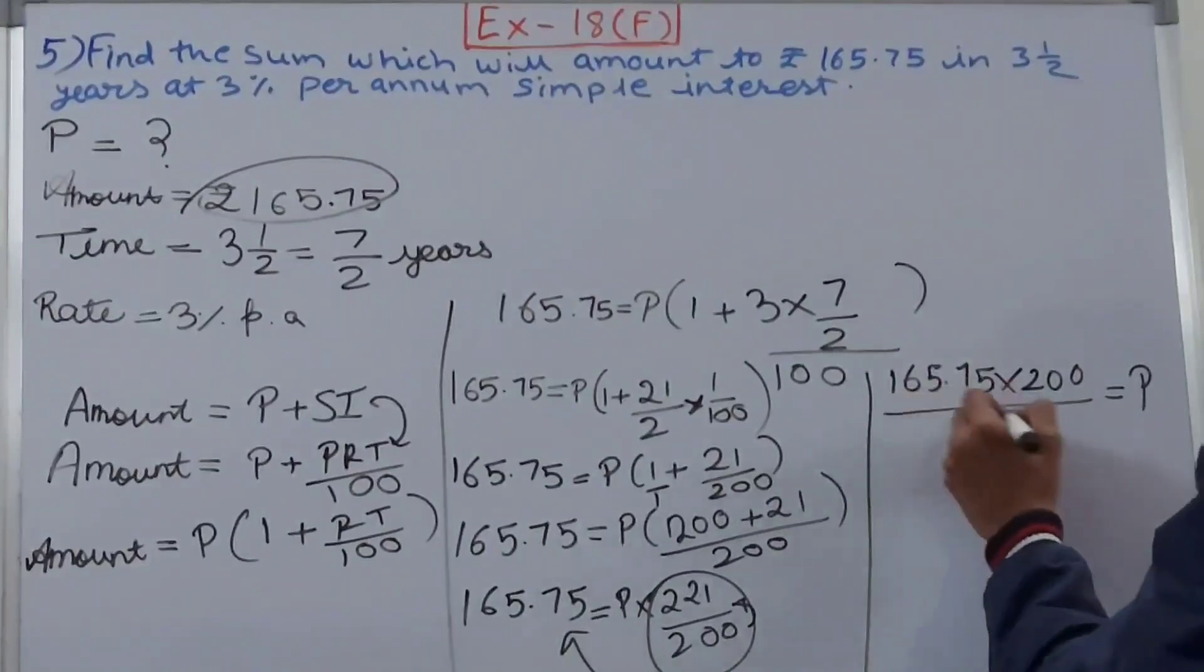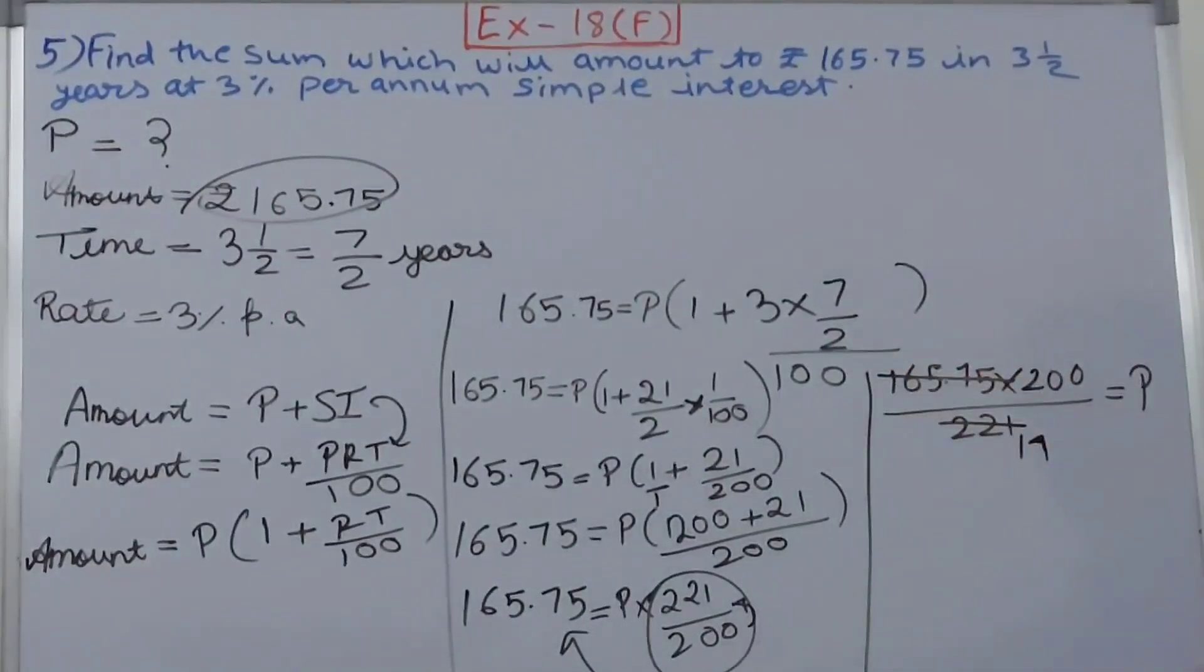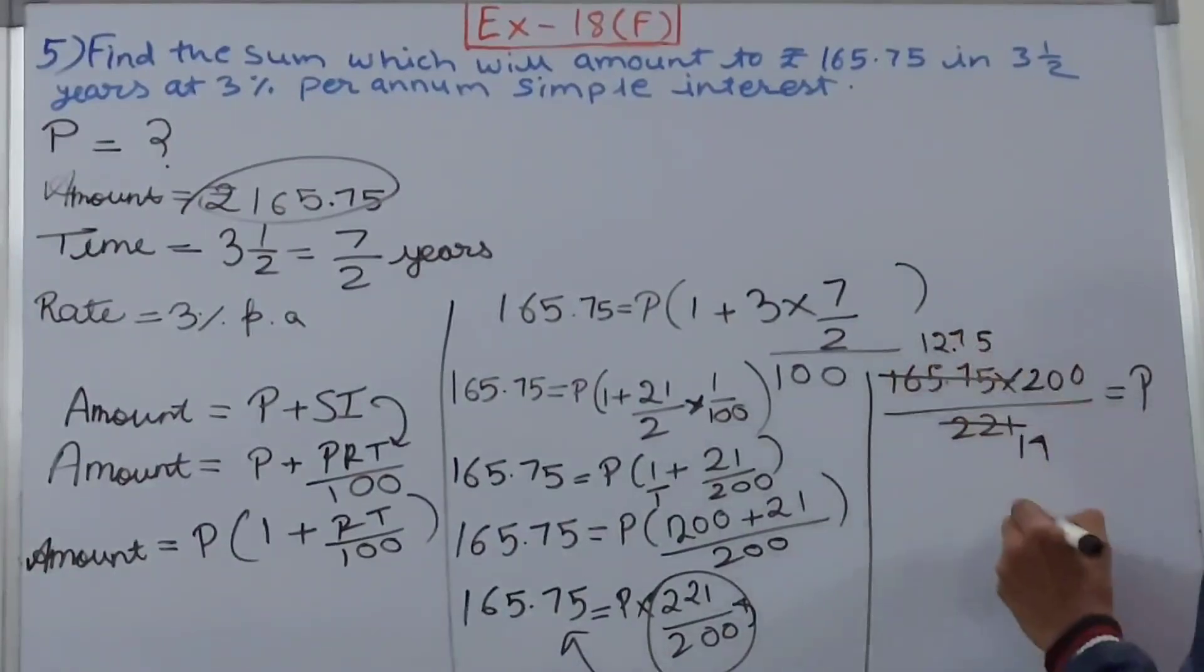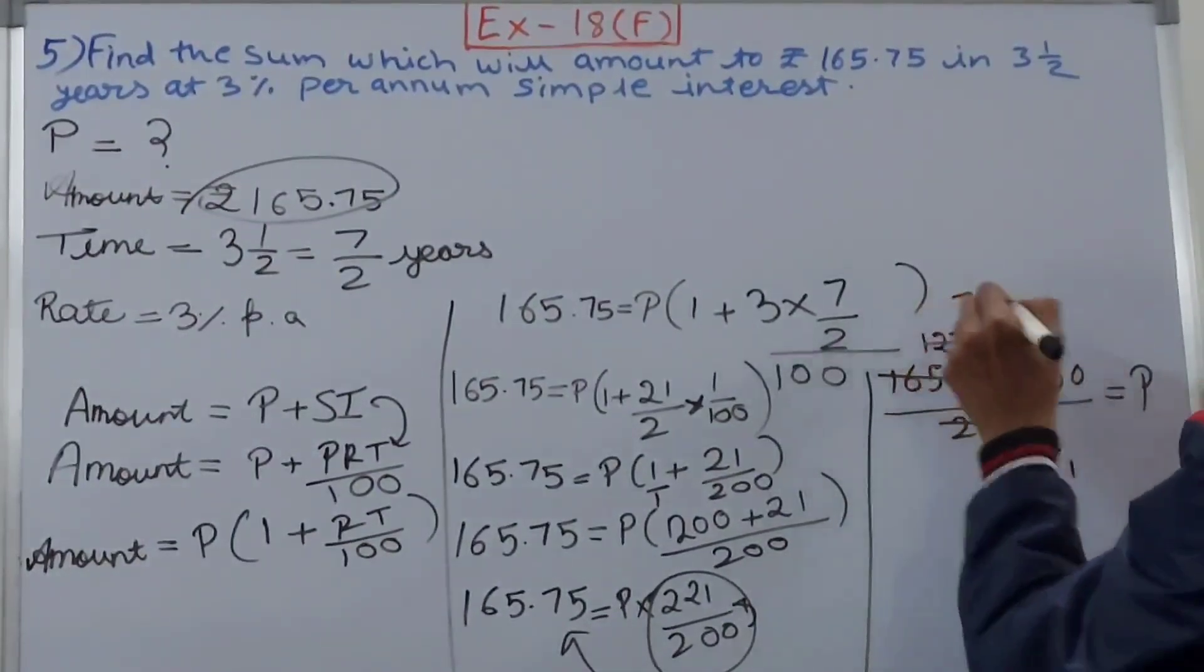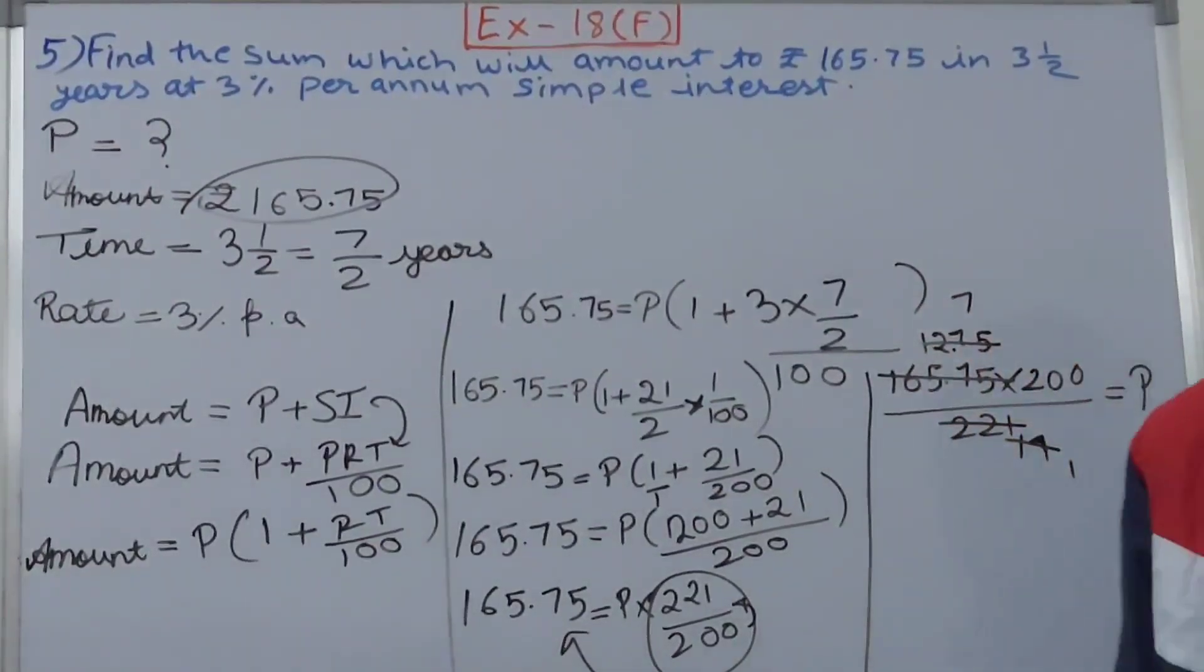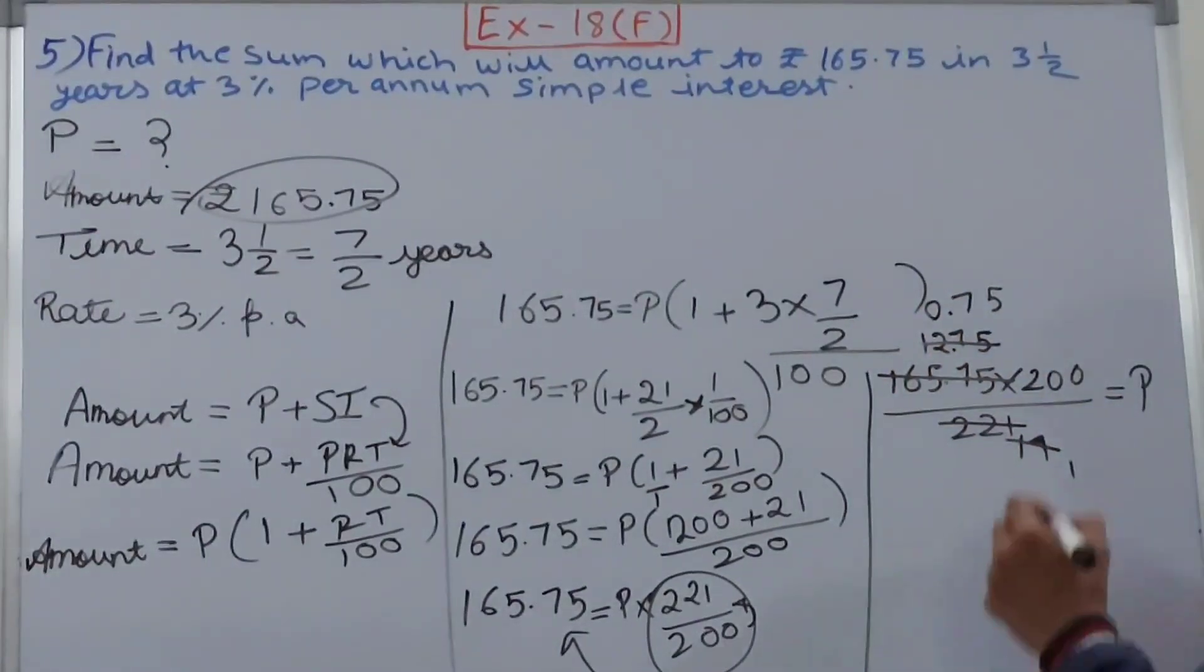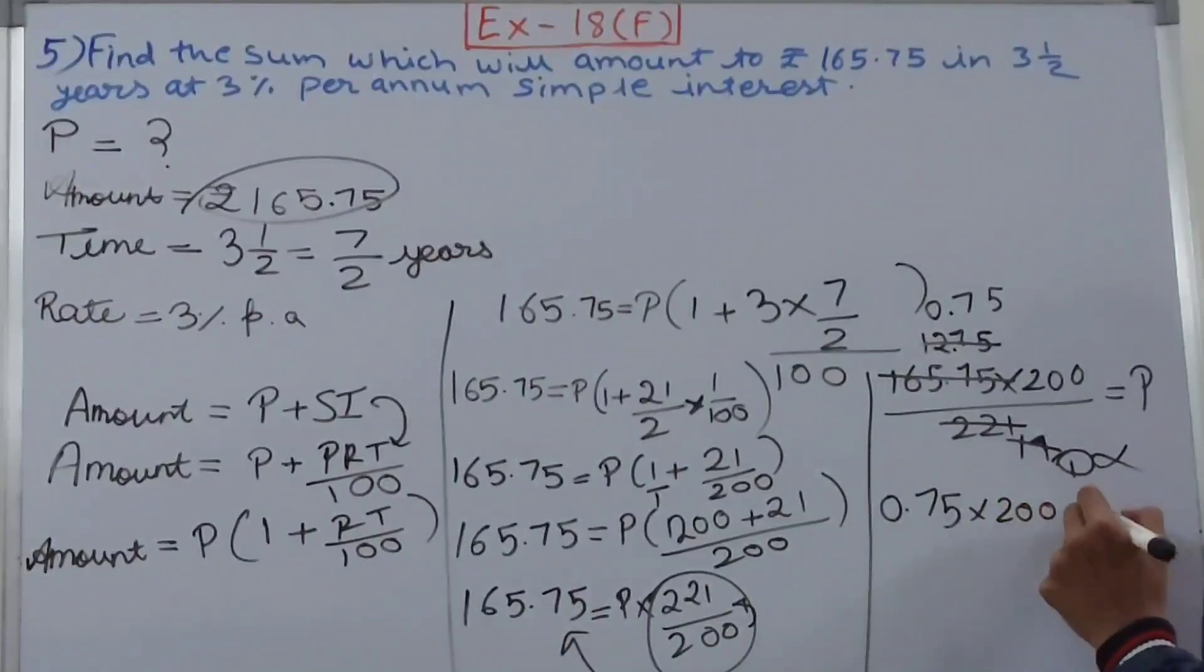221 and 165 - let's cancel it by 13. So 221 goes 17 times. This 165.75 simplifies to 12.75 and 17. Again cancel: 17 and 127 becomes 1 and 127. After cancellation, the denominator becomes 1, so completely remove it. So we get 0.75×200 that equals the principle.